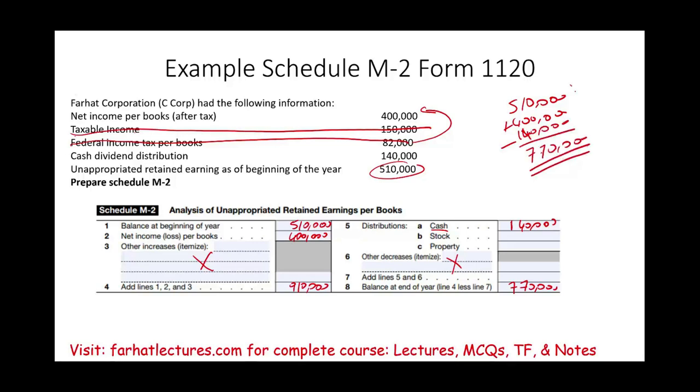Again, this is what we started with, beginning plus net income minus withdrawals or dividend equal to ending. And this is what it looks like on Schedule M-2. It's pretty straightforward computation, as long as you have no adjustments, whether increases or decreases.